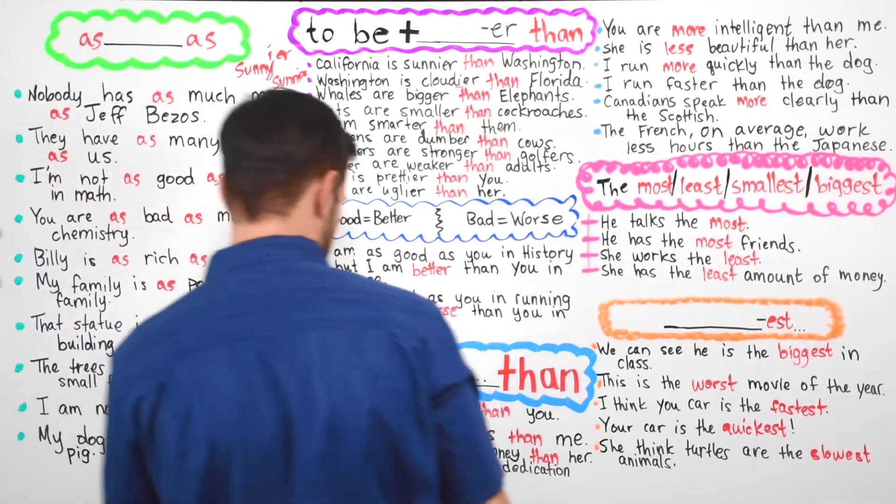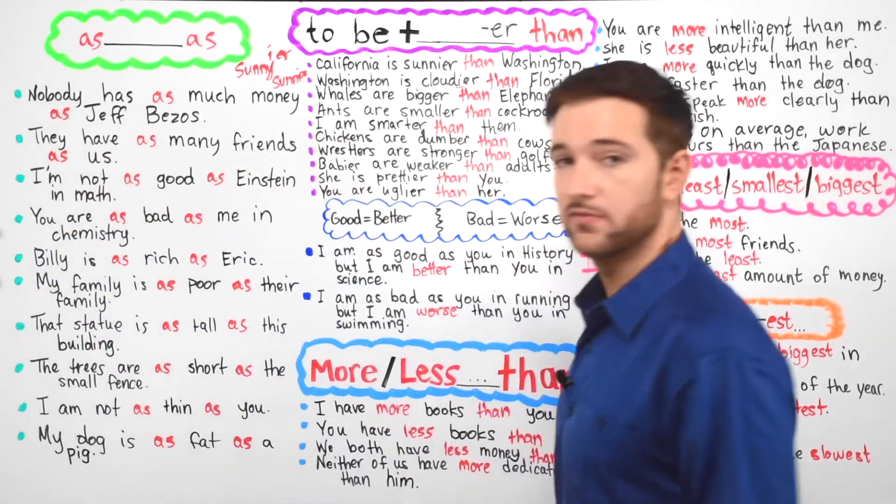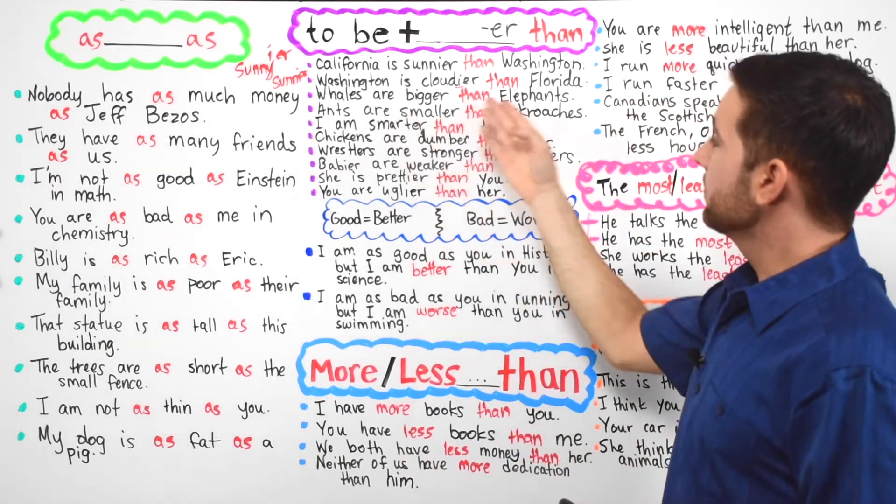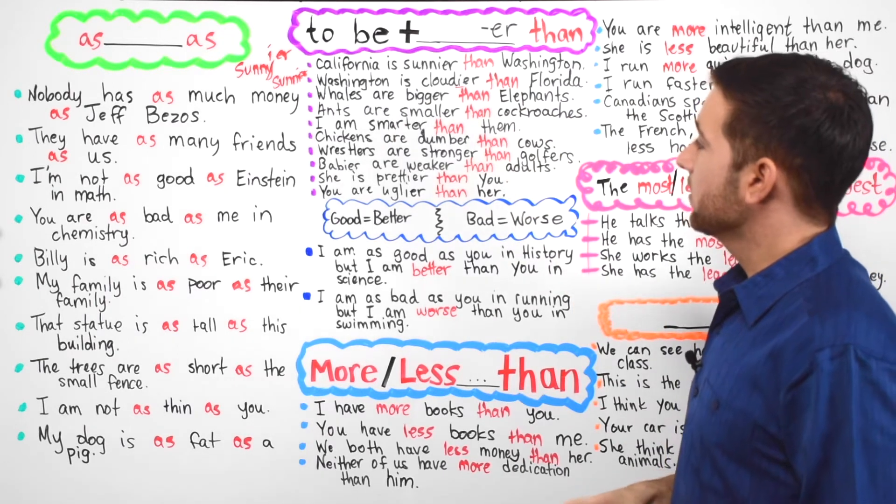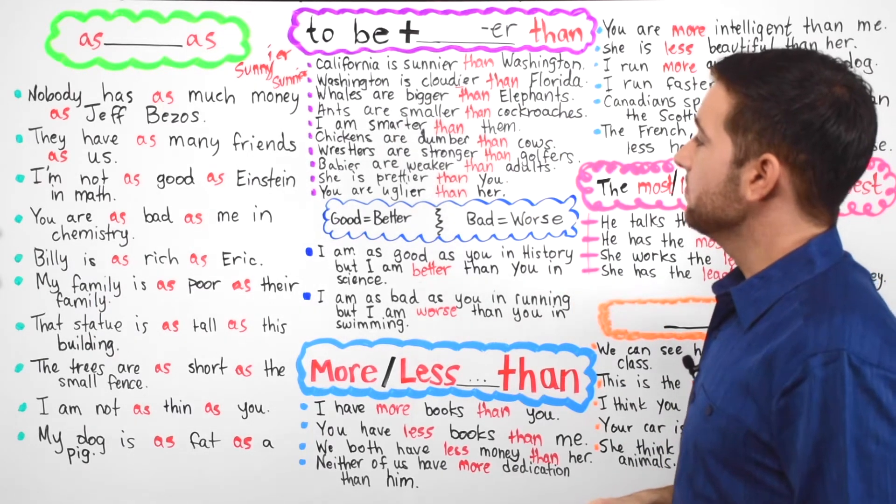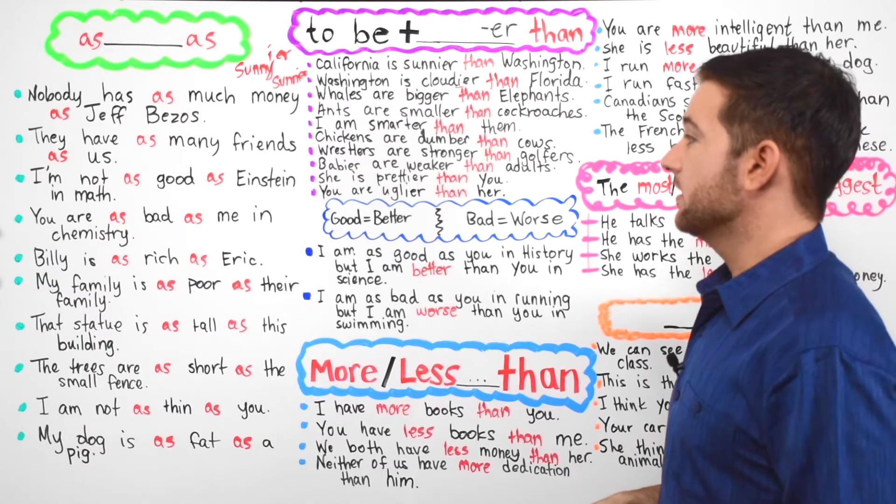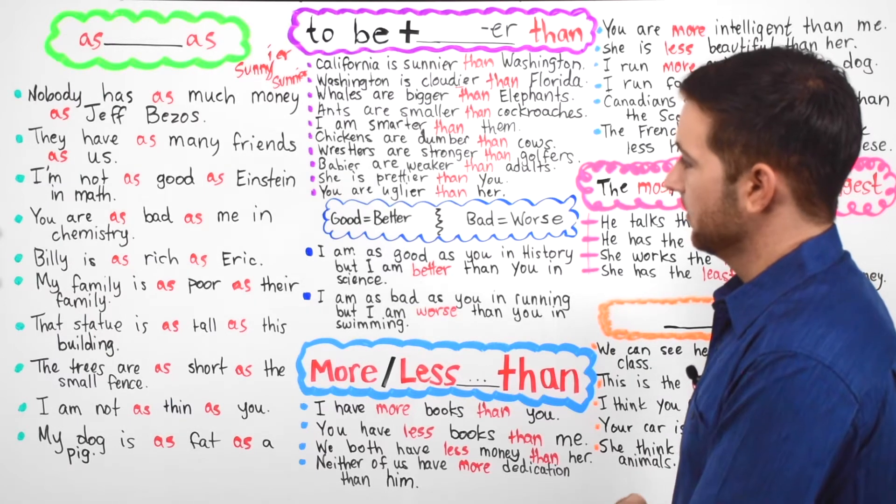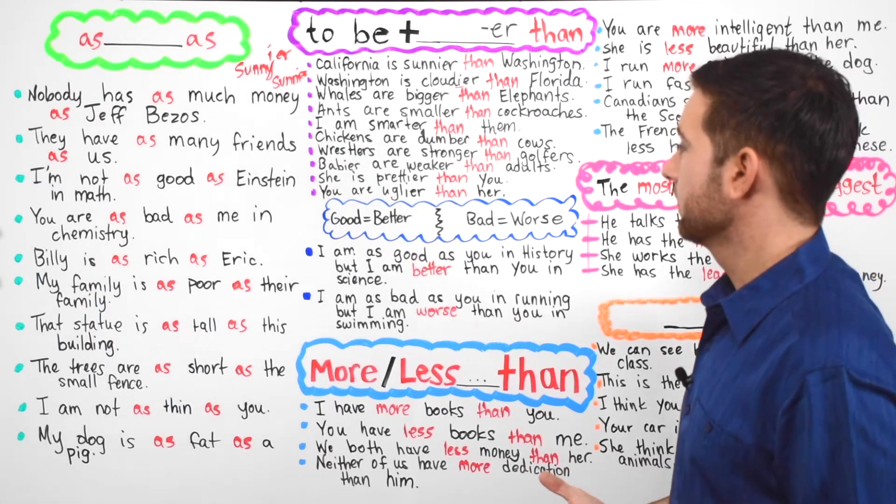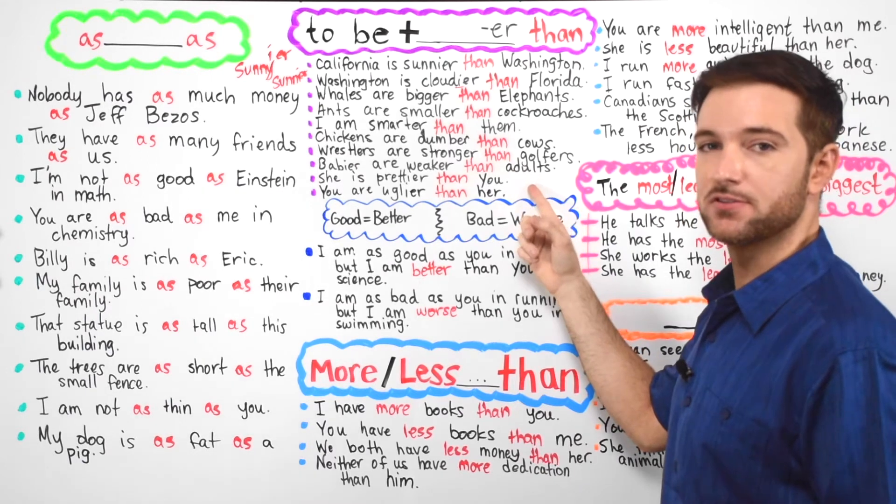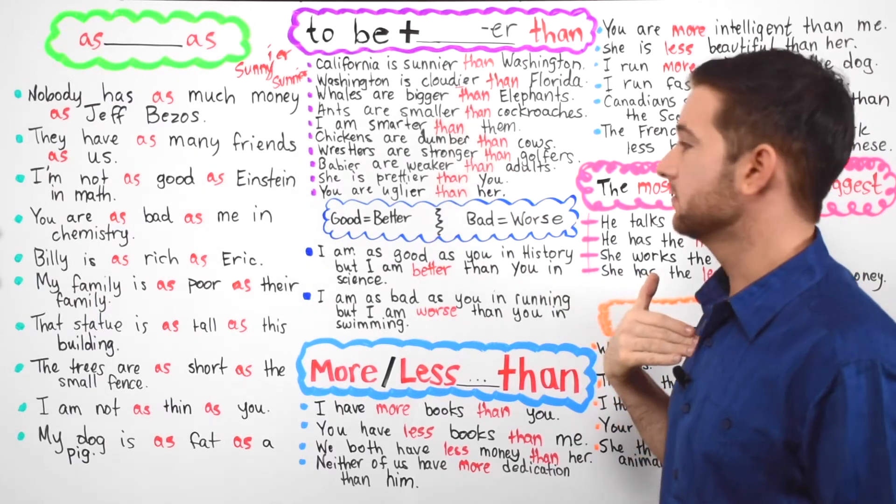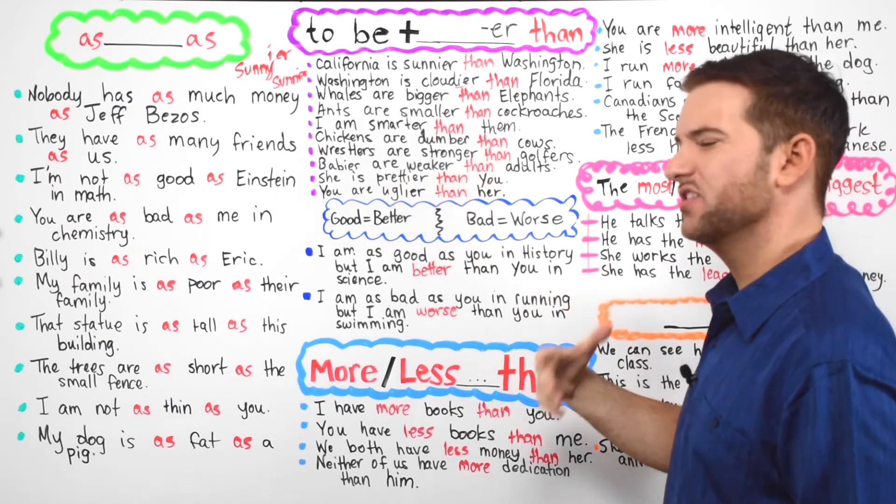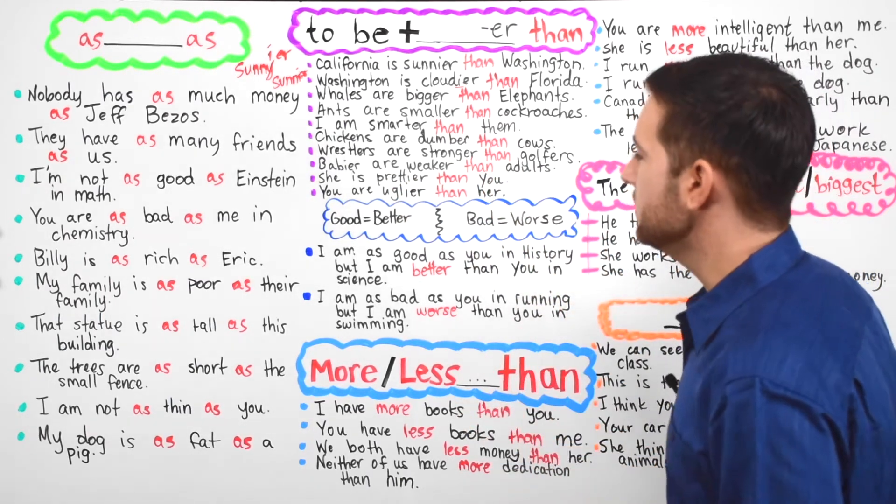In this example, it says Washington is cloudier than Florida. So same sort of thing. Whales are bigger than elephants. Ants are smaller than cockroaches. I am smarter than them. Chickens are dumber than cows. Wrestlers are stronger than golfers. Babies are weaker than adults. Some people say adults. I say adults. You'll hear both sometimes.